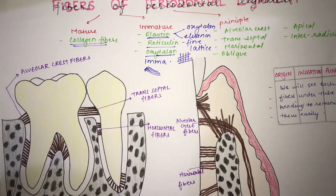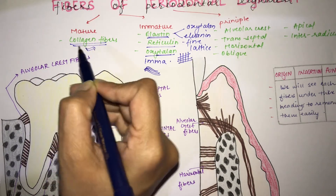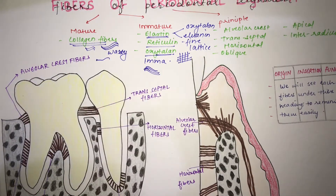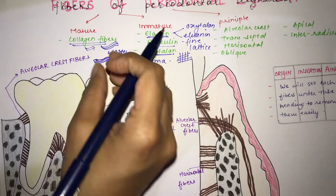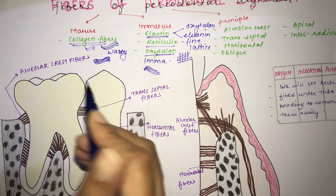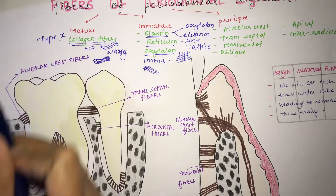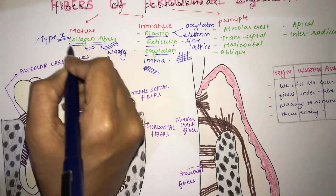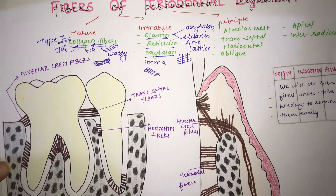The majority of fibers in the periodontal ligament are collagen in nature. Collagen fibers are inelastic, have a wavy appearance, and are found in bundles rather than singly. These bundled collagen fibers are known as the principal fiber group. The most common type in the PDL is Type 1 collagen, while reticular fibers are made of Type 3 collagen, and Type 4 collagen is seen in the basal lamina.